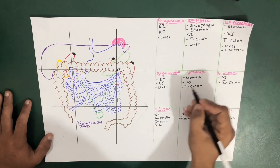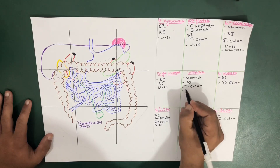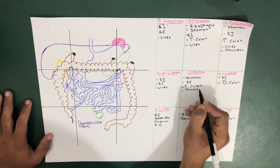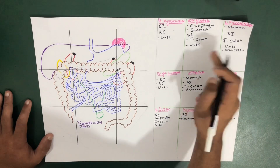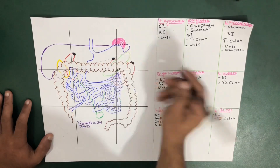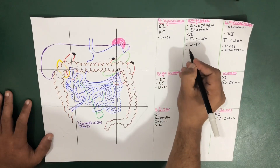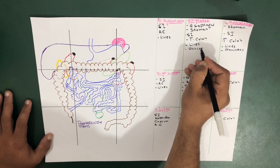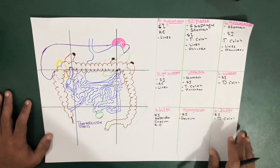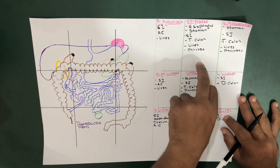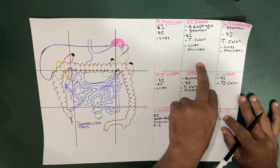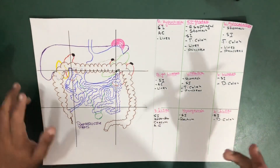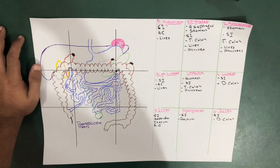In the umbilical region the pancreas is also present, and it's just passing through here as well. Now moving from the pancreas towards the kidneys.